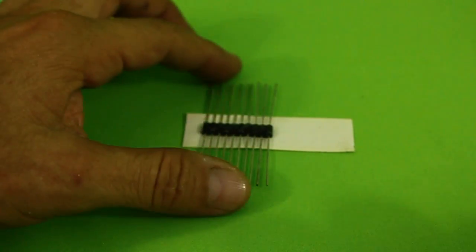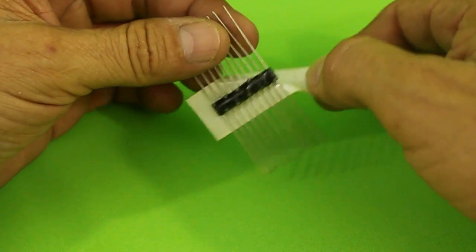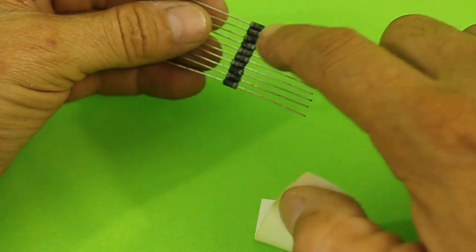Once the glue is dry you can take off the tape and apply glue on the other side.